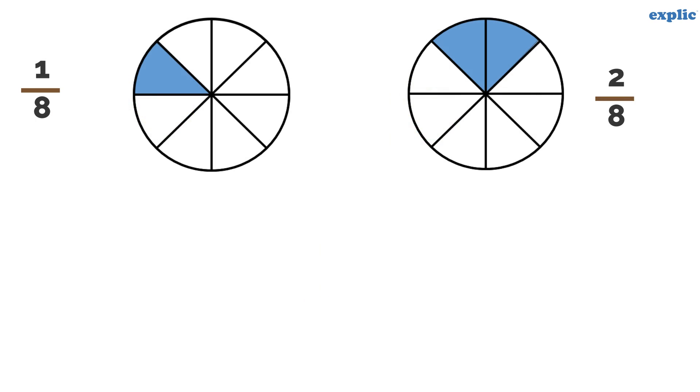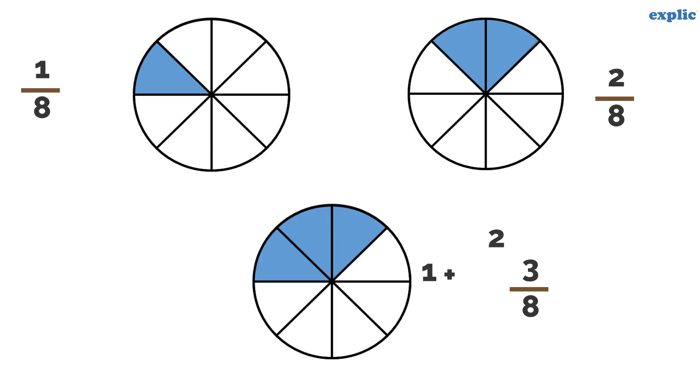Let's take another example: 1 by 8 and 2 by 8 makes 3 by 8. You can see, the numerator of the result is the addition of 2 numerators.